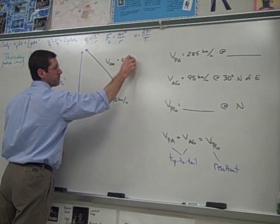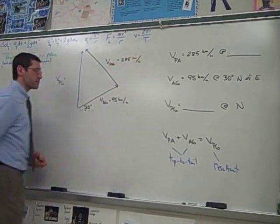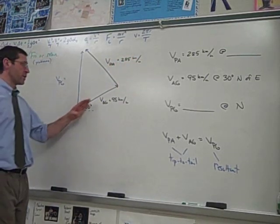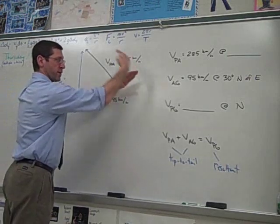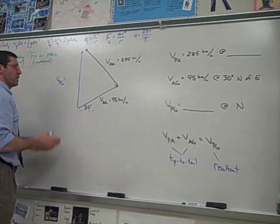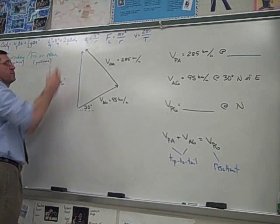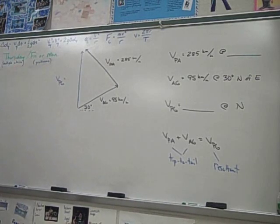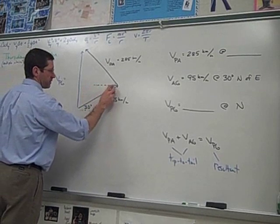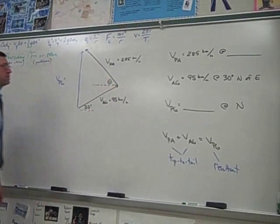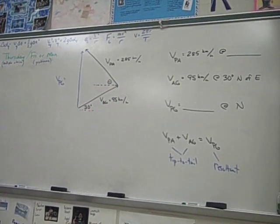So tip to tail, that means plane to air must be like that. So that's plane to air at 285. So imagine the wind's blowing this way, the plane needs to point that way to compensate for the air, and then the result of that is it goes due north. And then we can find this angle and we can put that in there for the direction.